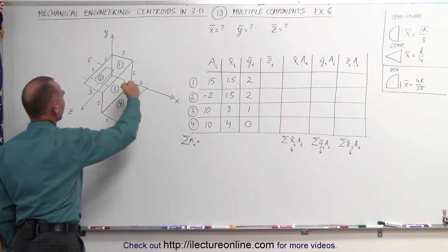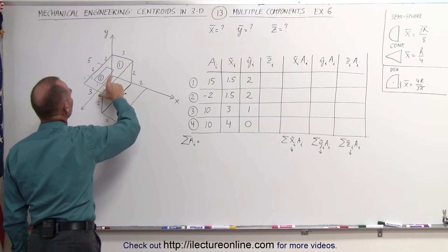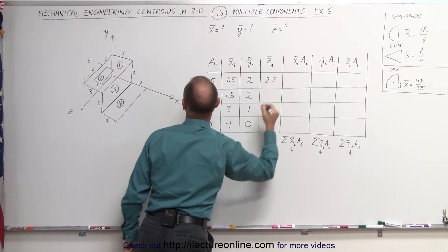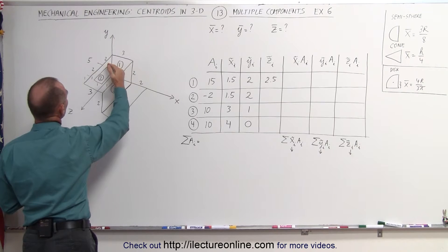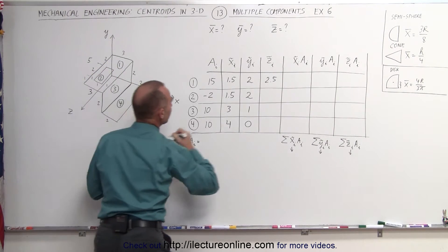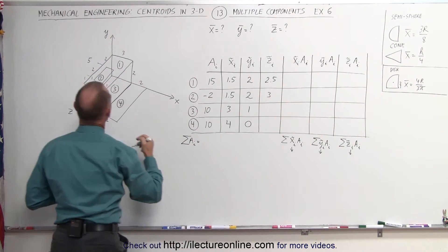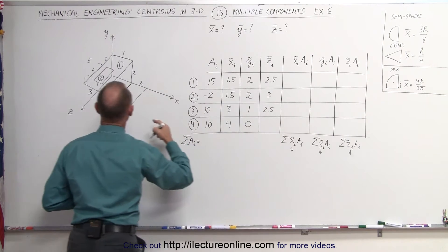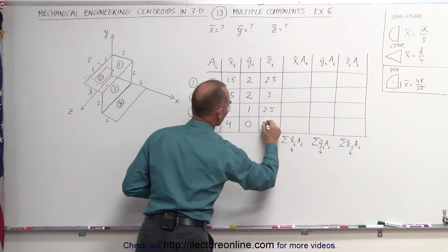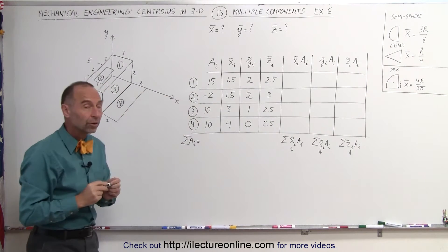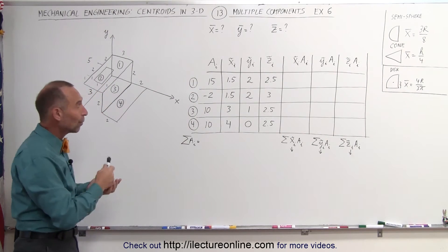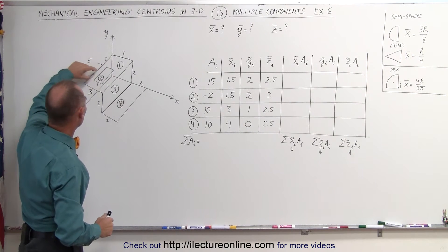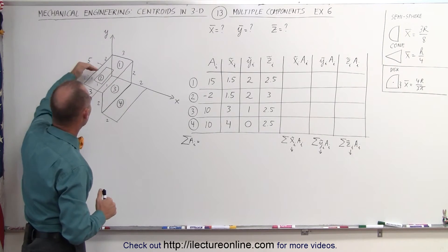In the z-direction: for the horizontal top piece, that would be halfway across — 5 units total, so that's 2.5. For the cutout, it starts at 2 and ends at 4, so the midpoint would be at 3. For the vertical part, that would also be 2.5. And for the bottom horizontal piece, that would also be 2.5. Quick check on the cutout: starts at 2, ends at 4, halfway point is at 3 — that's correct.